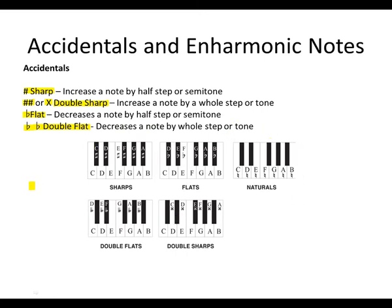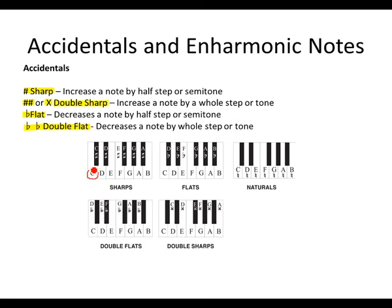Let's look at the figures. From C, if we move a half step up, we land on what we call C sharp. Similarly, from A, if we move a half step up, we get A sharp. Now, most interestingly, if we move from E a half step up, we get an E sharp — we can't always say F because it might not be part of the triad or the scale.